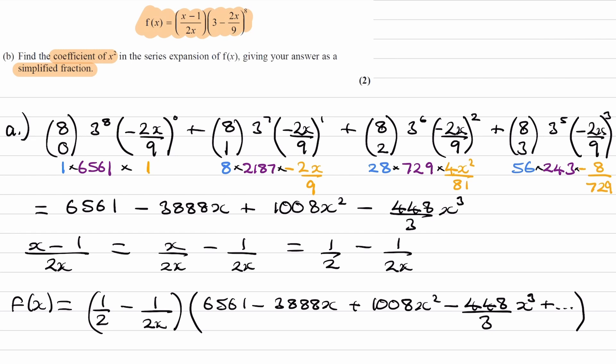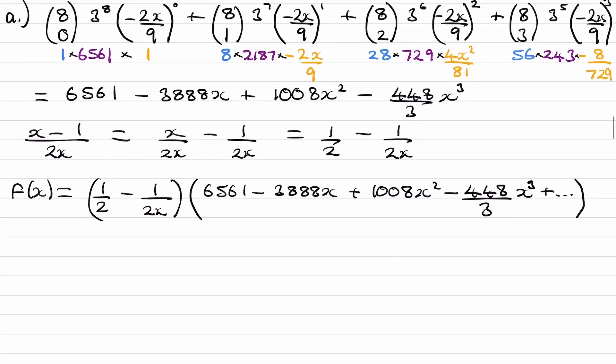Okay, so we're trying to get the coefficient of x². So when we multiply this out, we're just interested in the terms that give us x². So we'd have to do 1/2 multiplied by all of these terms. We'd have to do -1/(2x) multiplied by all of these terms. Which ones give us x²?